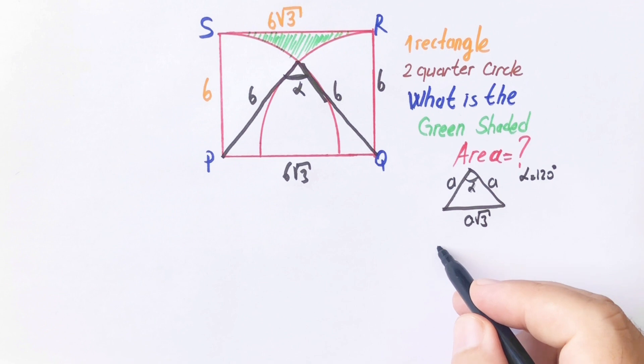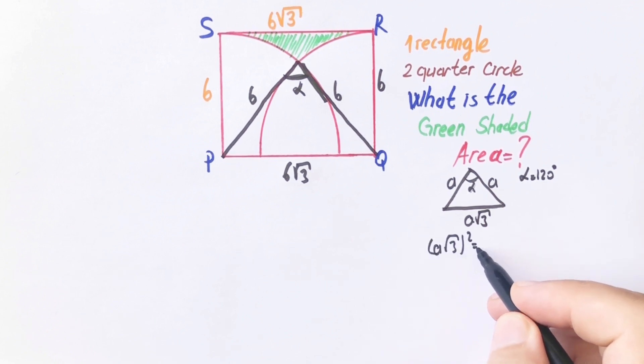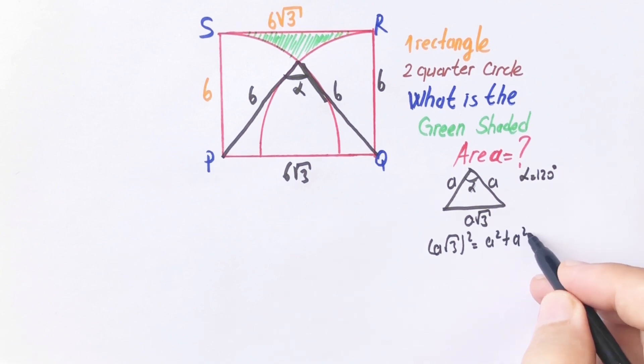Why? If you apply cosine theorem: a squared plus a squared minus 2 times a times a times cosine alpha.